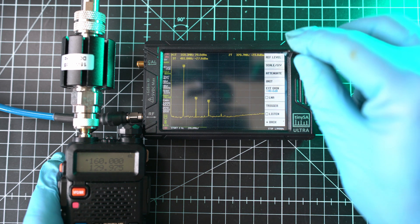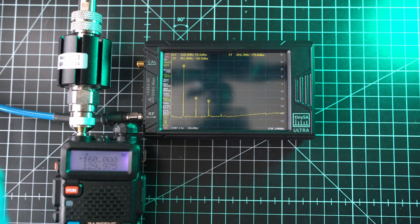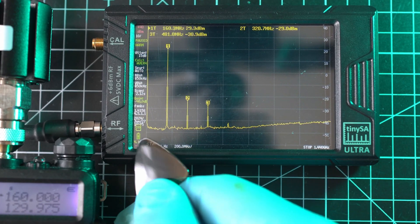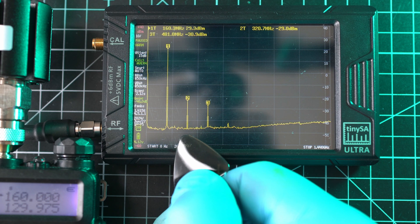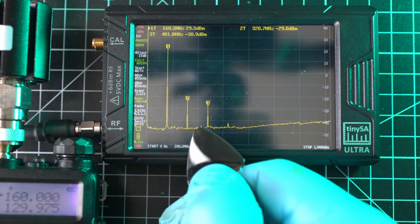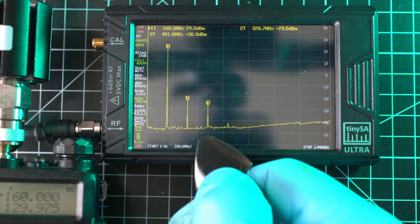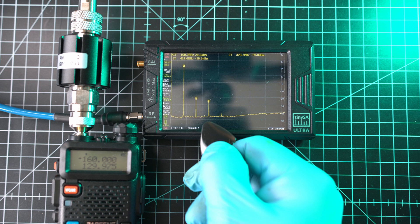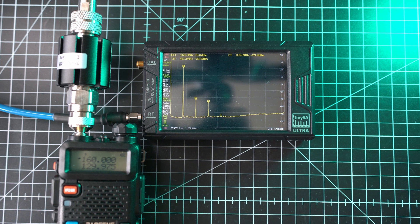And here we go, TinySA Ultra picked up two extra radio signals coming out of this radio. Main one is on 160 MHz. Second on 320 MHz, negative 29 dBm lower. And third signal is on 481 MHz and on negative 30.9 dBm lower. So this radio is not good, as spurious emissions has to be apparently at least 40 dB lower than primary signal.